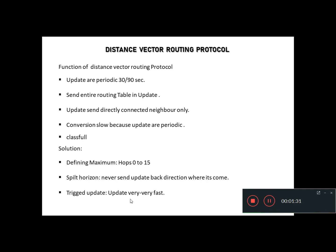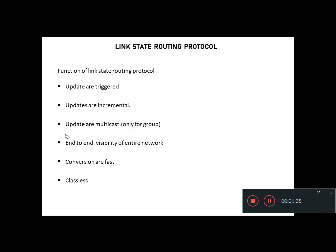Next is link state routing protocol. Its functions are: updates are triggered, so they are very fast; updates are incremental, meaning updates are only sent when a change occurs, such as a link going up or down; updates are multicast; end-to-end visibility of the entire network; convergence is fast because updates are triggered; and it is a classless update, meaning subnet mask information is included.